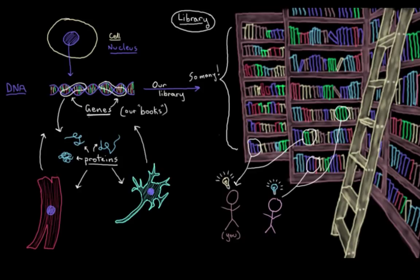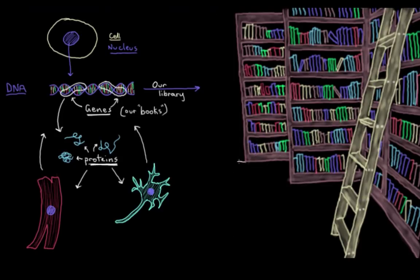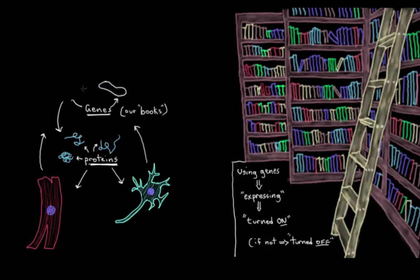And just a bit of terminology here: when a cell is actively using certain genes, it's said to be expressing those genes. And a gene being expressed is said to be turned on, and one not being expressed is turned off. So just keep that in mind.